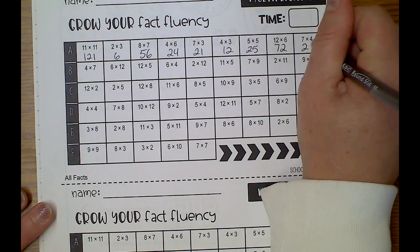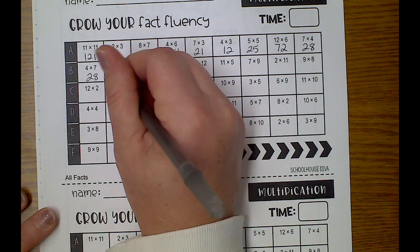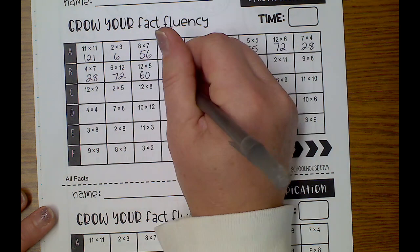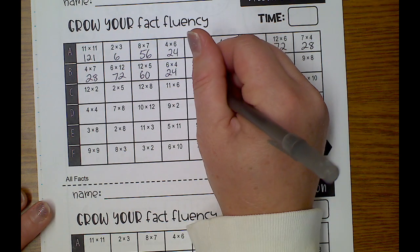7 times 4 is 28. 4 times 7 is 28. 6 times 12 is 72. 12 times 5 is 60. 6 times 4 is 24. 12 times, or 2 times 12 is 24.